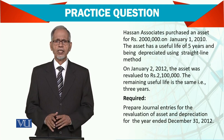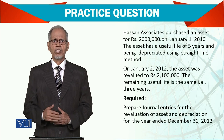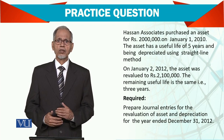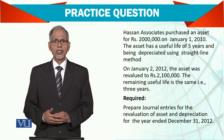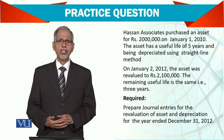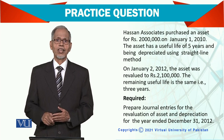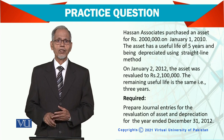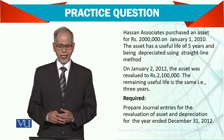So first of all, let's see how much is the revaluation reserve. Out of that reserve, the next 3 years' depreciation is based on 2.1 million divided by 3, which comes to 700,000 per year instead of 400,000.